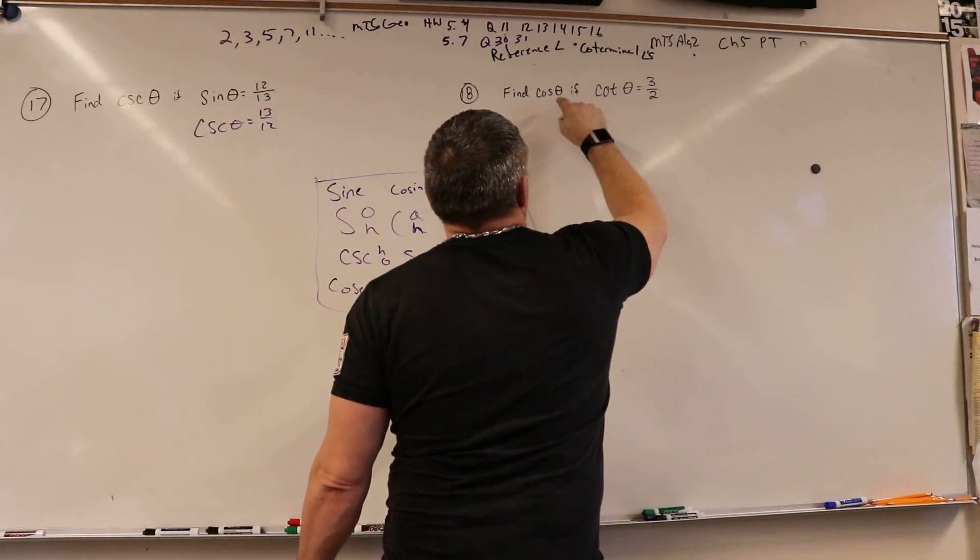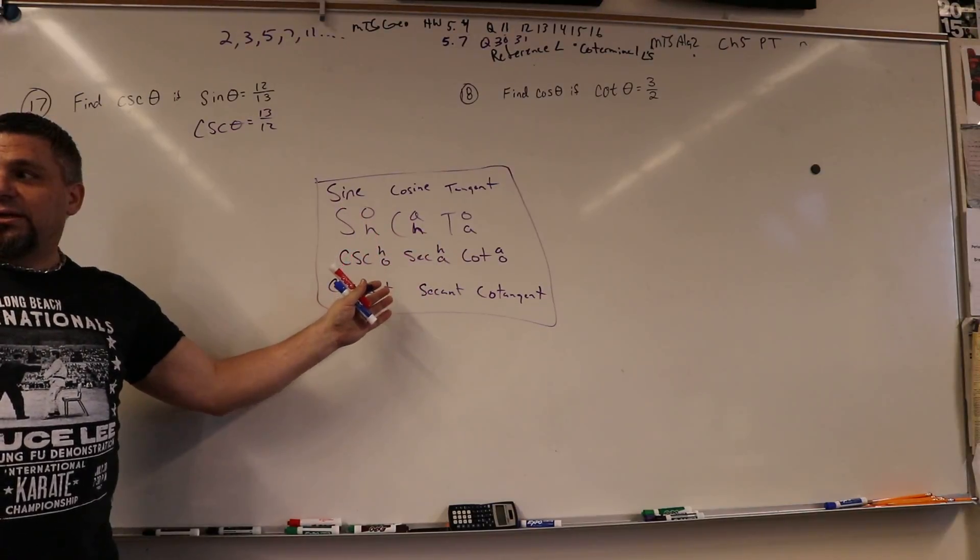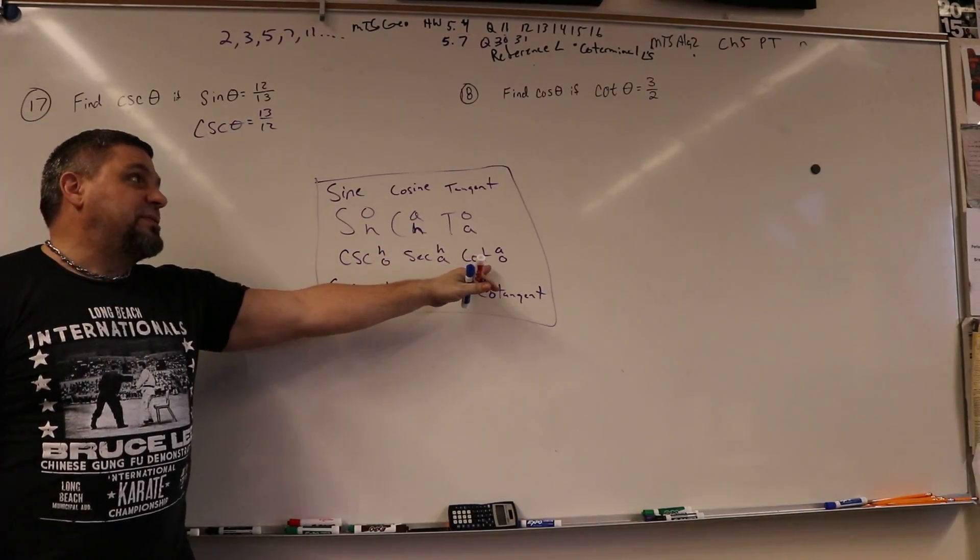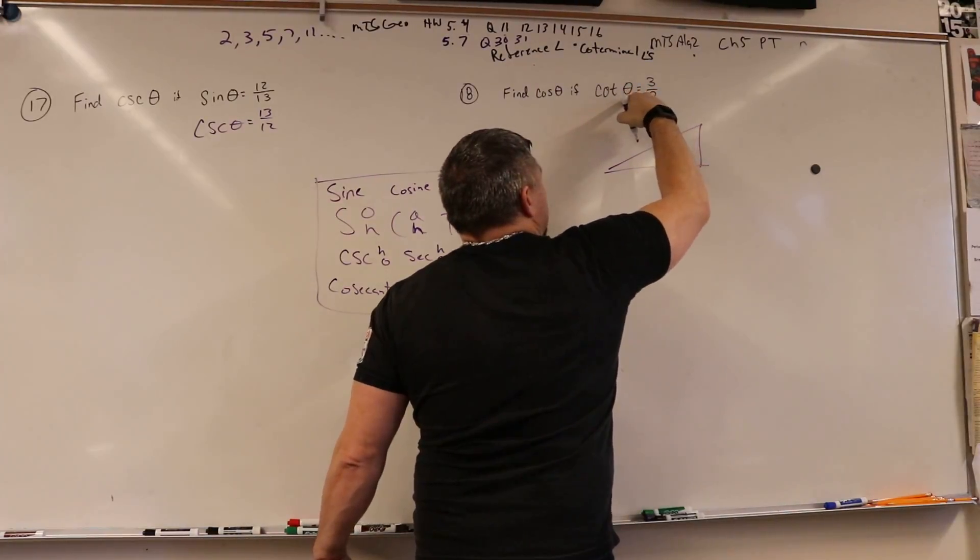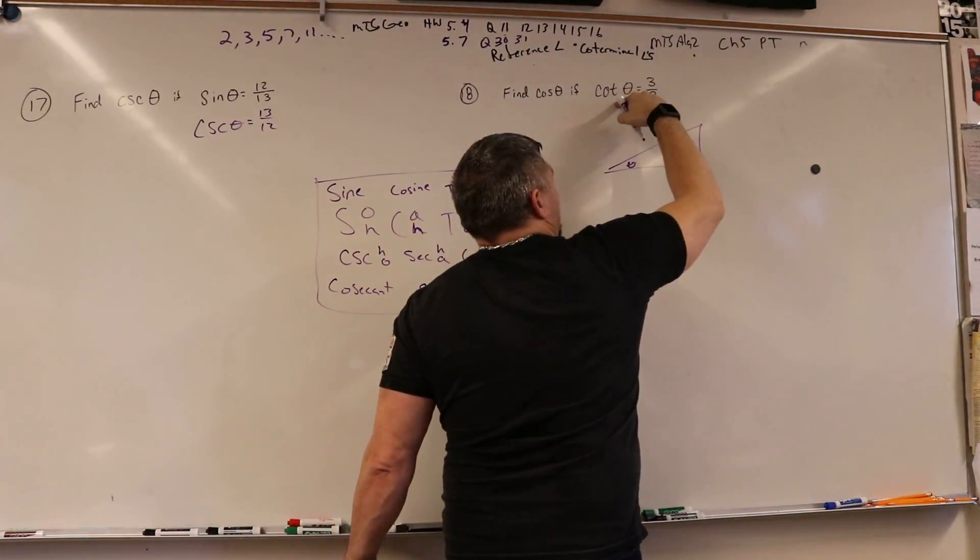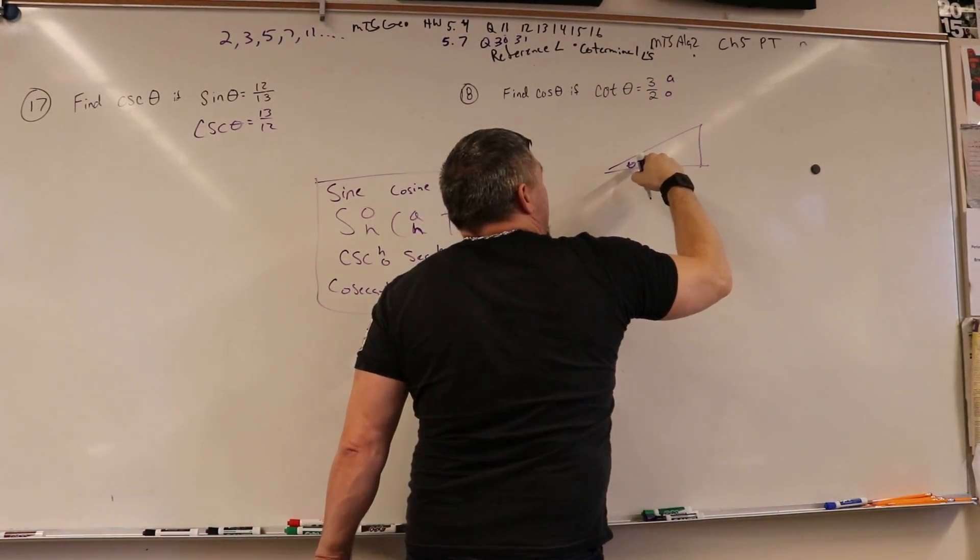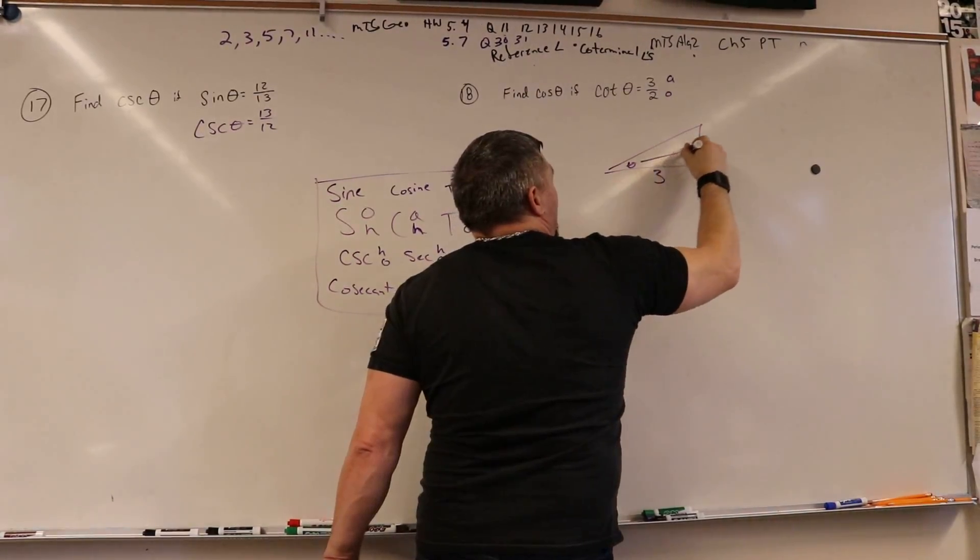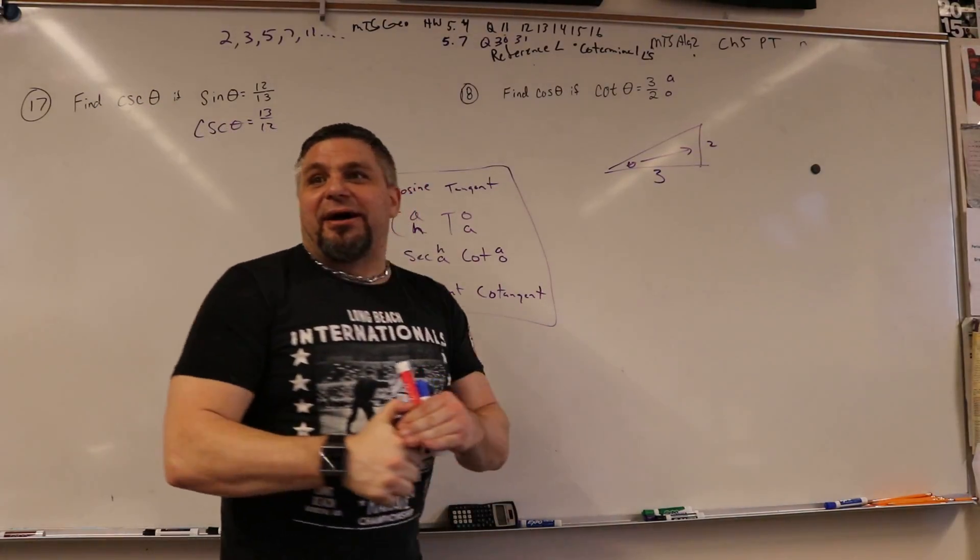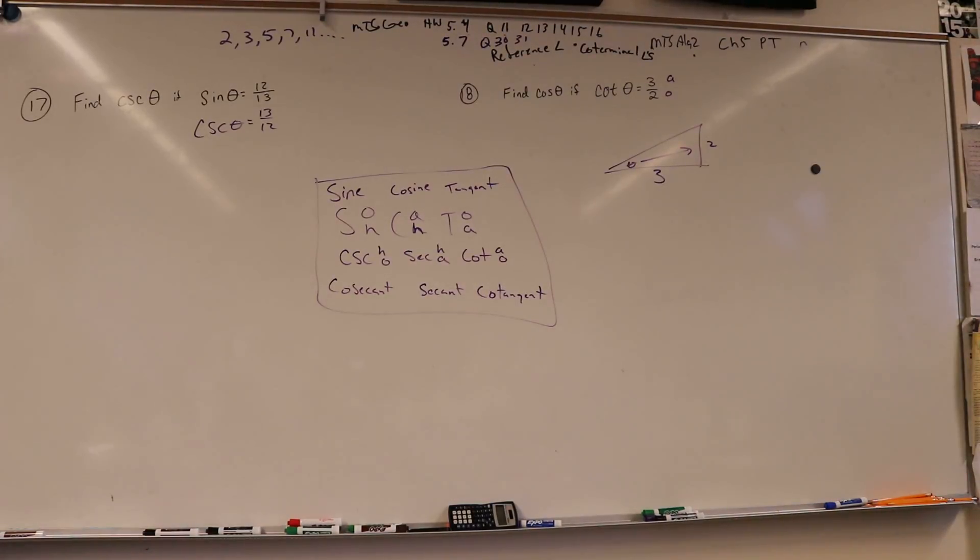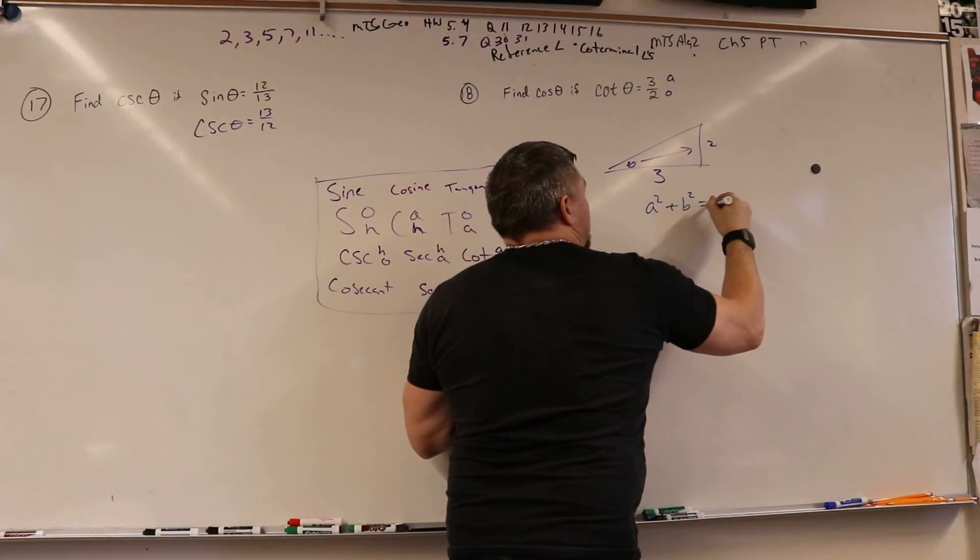And then, but here's the hard one. Cosine and cotangent. See, those aren't just opposites, right? Cosine and cotangent, those are not opposites. So what's happening here, is if I have a theta, right, then cotangent is adjacent over opposite, right? That means this is adjacent and this is opposite. So adjacent is 3, or I mean sorry, 3, and opposite is 2. And so to find the hypotenuse, now I gotta know a squared plus b squared equals c squared, right?